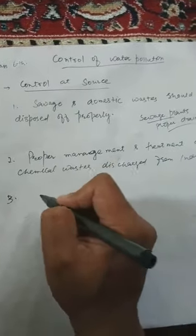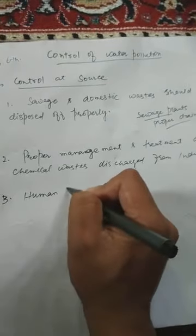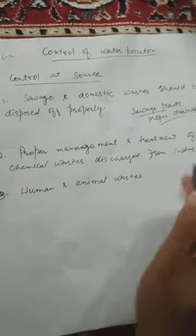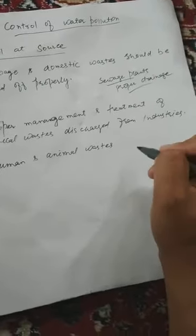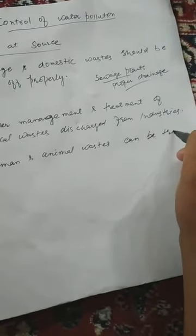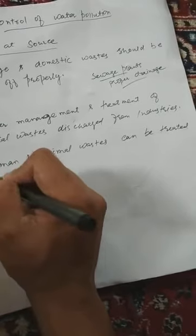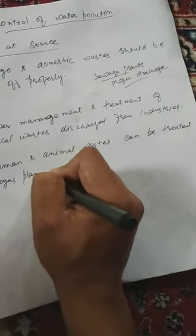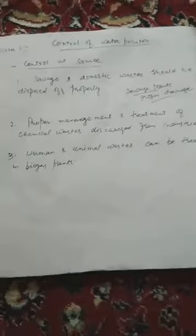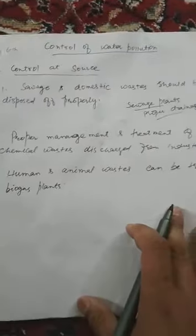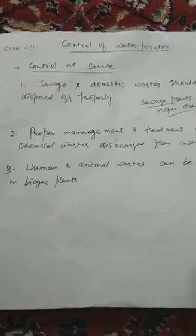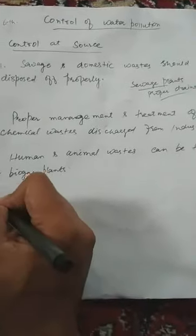Teesra point: human and animal waste can be treated in biogas plants. Human aur animal waste ko water bodies mein mat daalo. In ko hum biogas plants mein treat kar sakte hain, jiski wajah se hum biogas aur fertilizer milenge, bio-manures milenge, aur water pollution bhi bach jayegi.